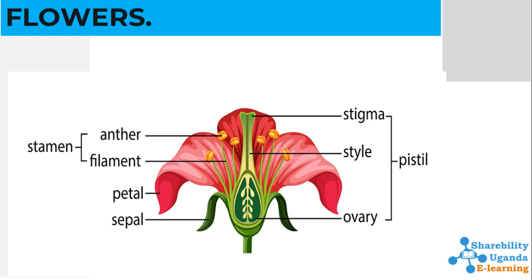The stamen has two parts: the anther and the filament. That is the male part of the flower. And the pistil, which is the female part of the flower, has three parts: the stigma, style, and the ovary.